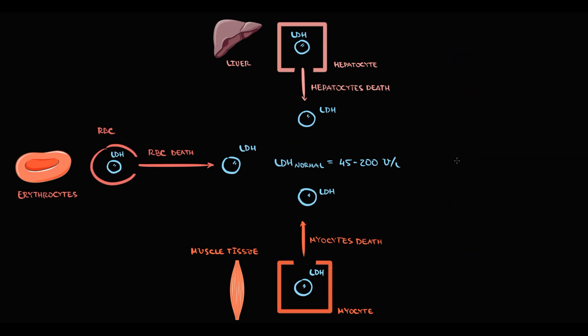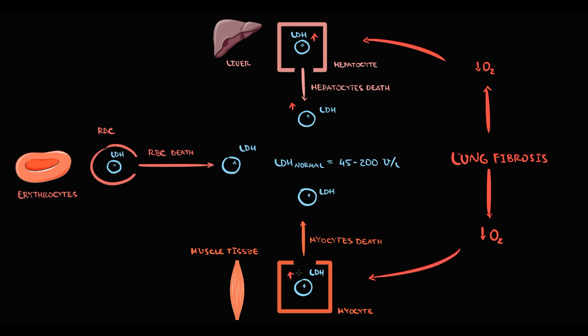The second condition is lung fibrosis. In lung fibrosis, there is decreased intake of oxygen into the lungs, eventually causing hypoxemia. Hypoxemia provokes liver and muscle tissues to shift energy production from aerobic to anaerobic glycolysis, stimulating cells to express more LDH. Even if cells die at a normal rate, simply because they contain higher concentrations of LDH, this causes elevation of LDH in the blood.